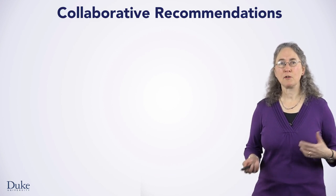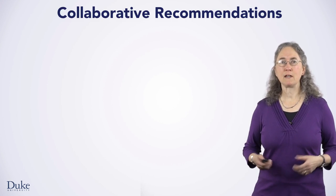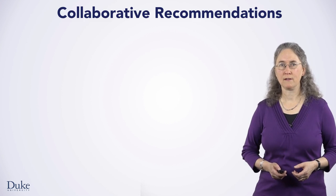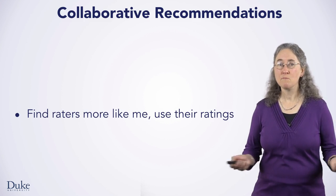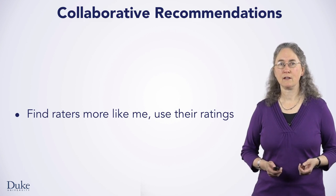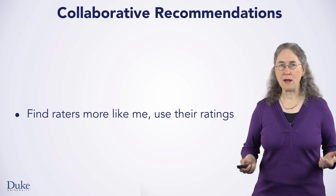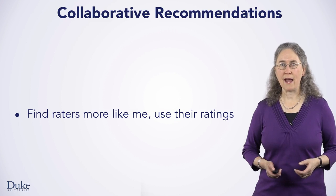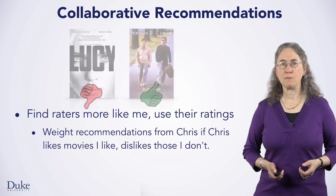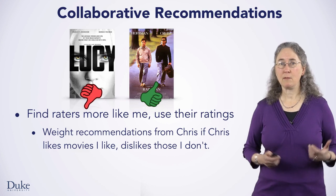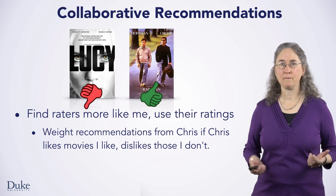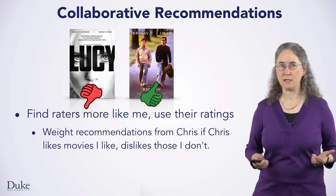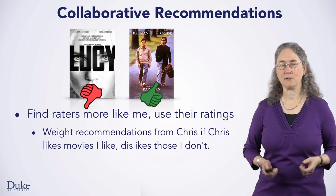To create collaborative recommendations, you'll need to make a few modifications to the averaging method you've already written. You'll need to find raters more like you and use their ratings. The 'you' here will be a parameter to the method used to create recommendations by using weighted averages. For example, Chris and I may both dislike the movie Lucy and both like the movie Rain Man, so Chris is close to me in some way because we have similar tastes in movies.